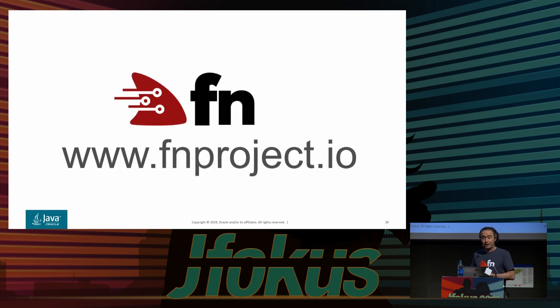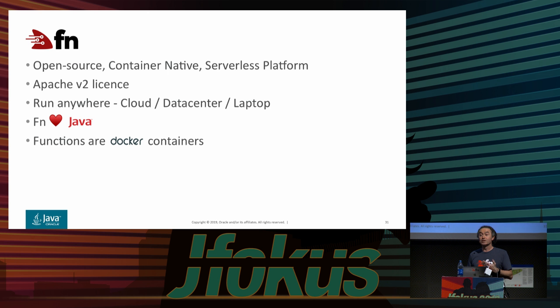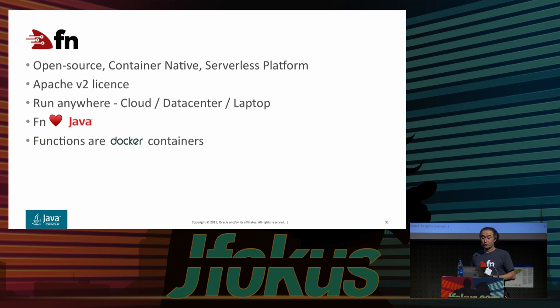I'm going to talk in the context of the FN Project. I work on FN — you can find it at fnproject.io. It's open source, Apache 2, built on containers, and it's basically a functions-as-a-service platform. It runs anywhere — on my laptop, in the cloud. At Oracle we're building a full managed cloud service out of this. It's got really good Java support, though it also supports Go, Ruby, Python, and Node. In this container-native model we're packaging functions as container images — the container is deployed to the cloud, spun up when functions are called, and taken down again.